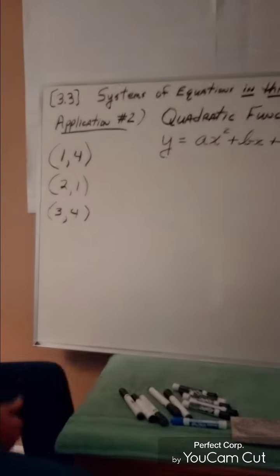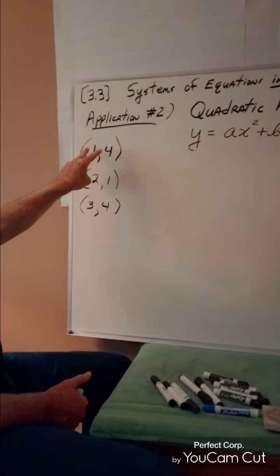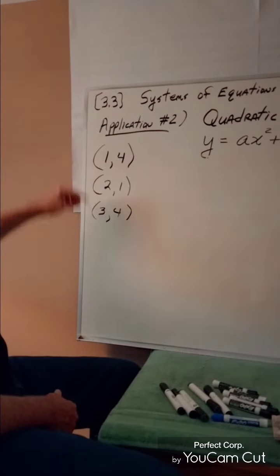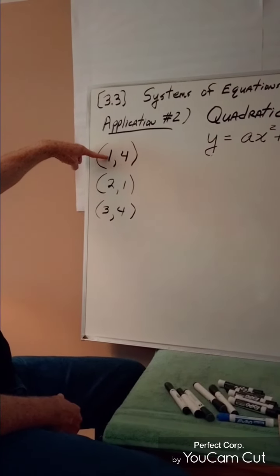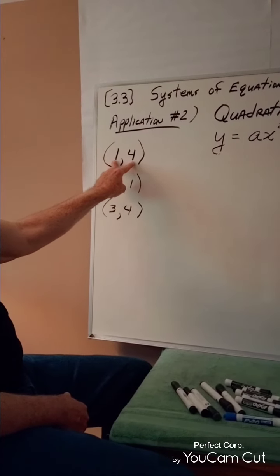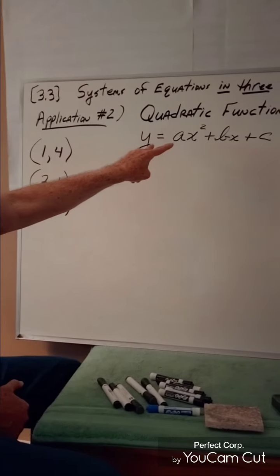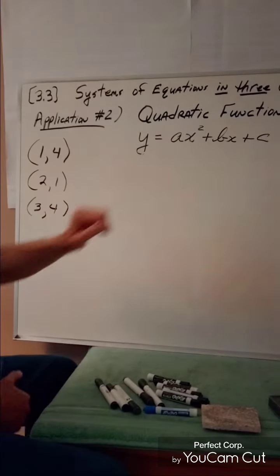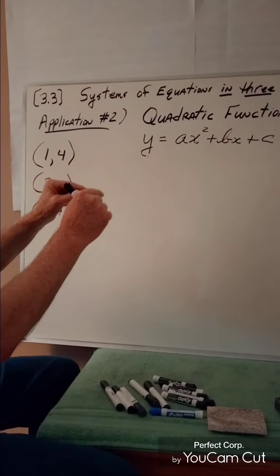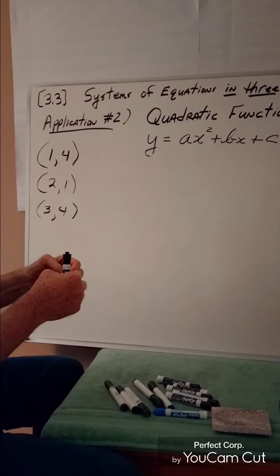We start off with the first point, the first ordered pair. The first value is our x, and the second is our y. We're going to take these two integers and substitute them into the model, do a little mathematics, and it's going to lead us to equation number one of our system.